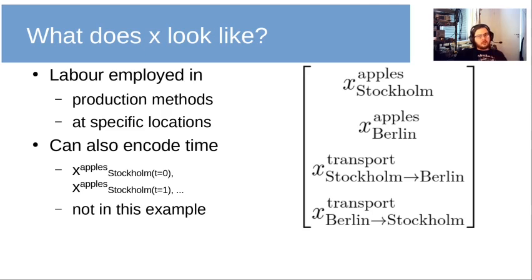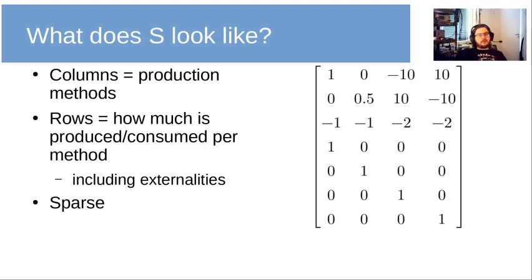X contains the amount of labor employed growing apples in Stockholm, apples in Berlin, or transporting things from Stockholm to Berlin or from Berlin to Stockholm. It's also possible to encode time in X — in that case we would have the amount of labor employed in all these places for different planning periods, but I don't do this in this example because it would make it too complicated. Finally, we have S, which consists of a bunch of columns, one per production method. Each row is how much is produced and consumed for each of these methods, including externalities. Notably, S is quite sparse — it has a lot of zeros in it, which is important for computational reasons.